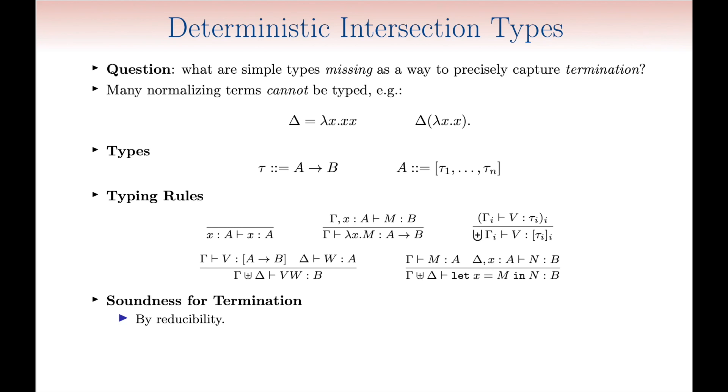Even if the class of type terms is considerably larger than for simple types, this remains included in the class of normalizing terms. And surprisingly, this is enough to get completeness, itself provable by way of subject expansion.